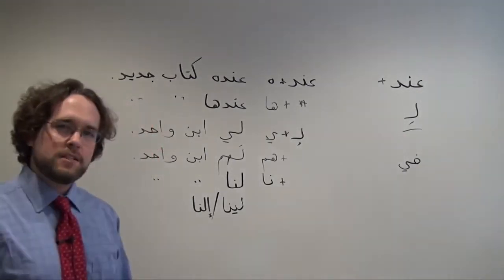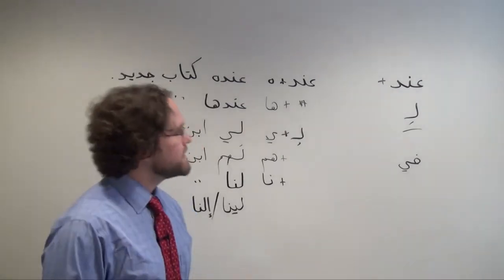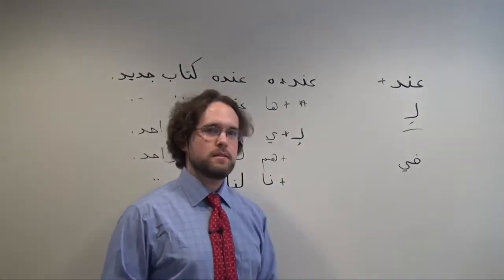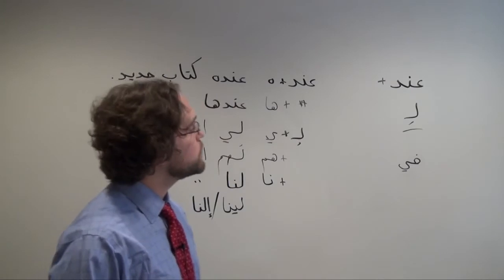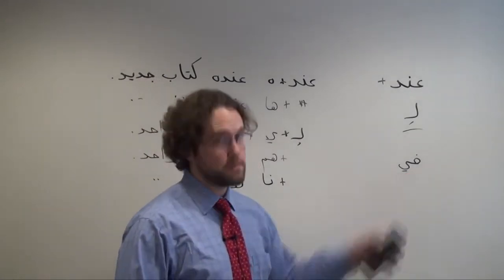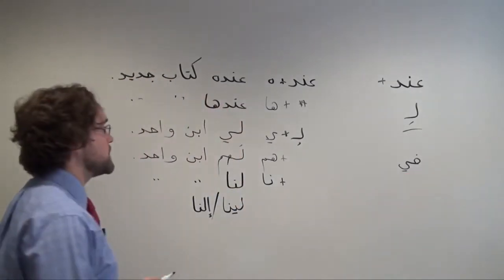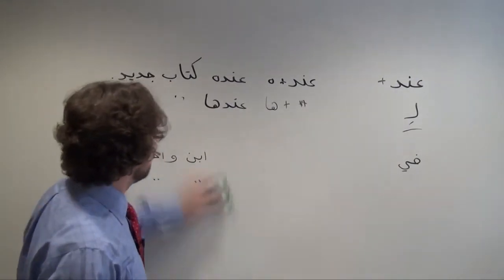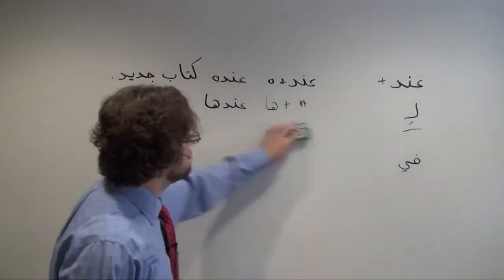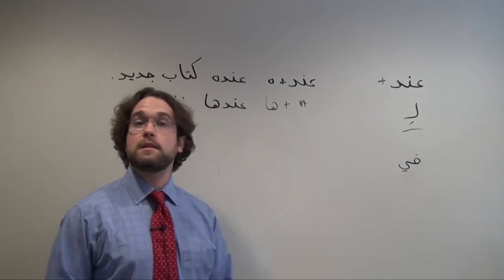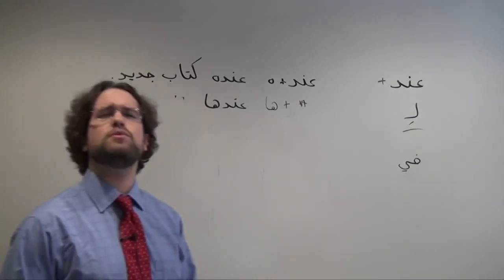If we're talking about a place or an institution, again, we can't use عند because عند is only for people, so instead we're going to use في plus exactly the same suffixes. For example, if we want to say this, this town, this city has beautiful buildings.